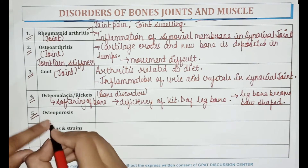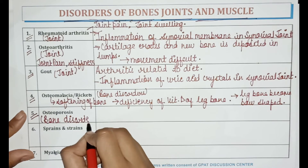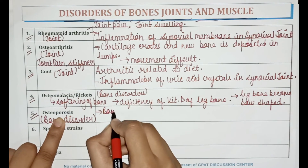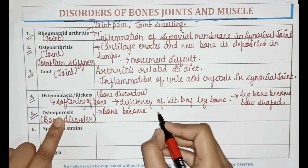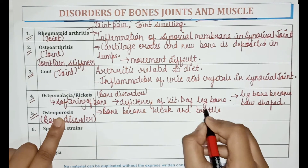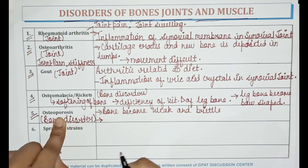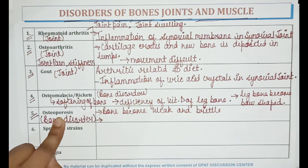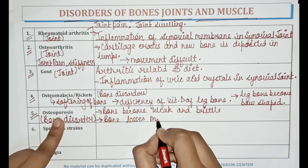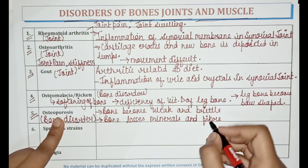Osteoporosis is a bone disorder. In osteoporosis, bones become weak and brittle. This is because bone loses minerals and fiber from the matrix, resulting in weak and brittle bones.